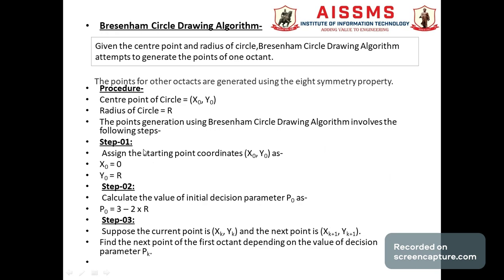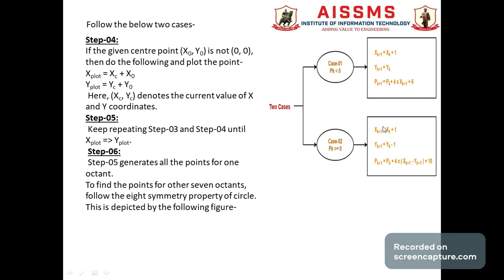In summary, the algorithm works as follows: first, find the center and radius of the circle. Step 1: assign initial coordinates x0 = 0, y0 = r. Step 2: calculate initial decision parameter p0 = 3 − 2r. Step 3: find the current position (xk, yk) and next position (xk+1, yk+1), where the next point depends on the decision parameter pk with two cases.